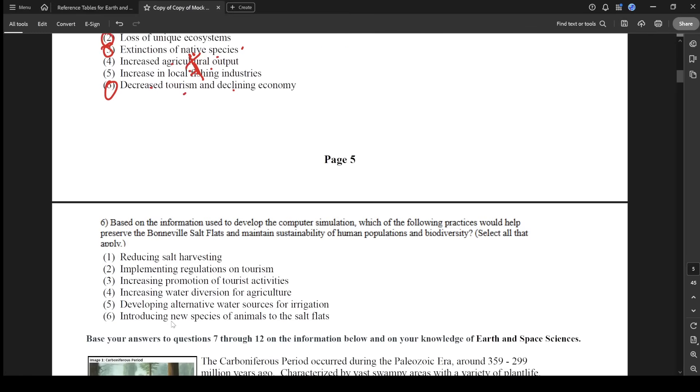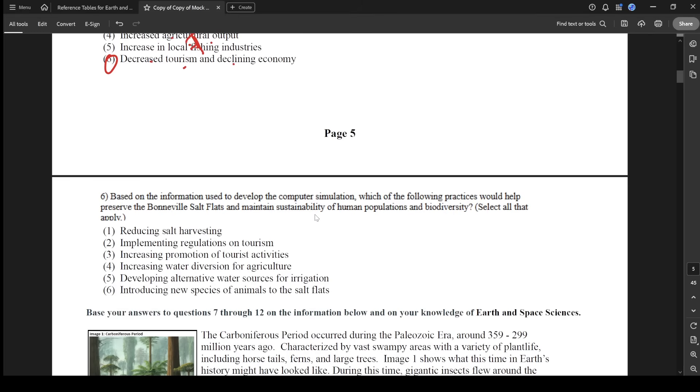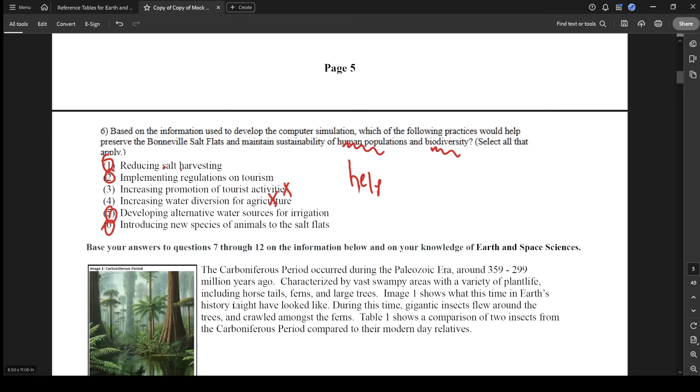Number six. Based on the information used to develop the computer simulation, which of the following practices would help preserve the Bonneville salt flats and maintain sustainability of human populations and biodiversity? We want to help preserve the salt flats. Reducing salt harvesting? Yeah, that would be good. Implement regulations on tourism? Yeah. Because if there's less tourists in the area, they might not destroy it as much. Increase promotion of tourist activities? No. Increase water diversion? No. Develop alternative water sources? Yeah. That means we don't have to worry about going over there. Introduce new species to the salt flats? Sure. That would increase biodiversity. So I would go with one, two, five, six.